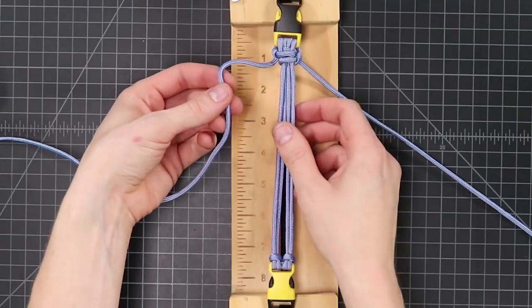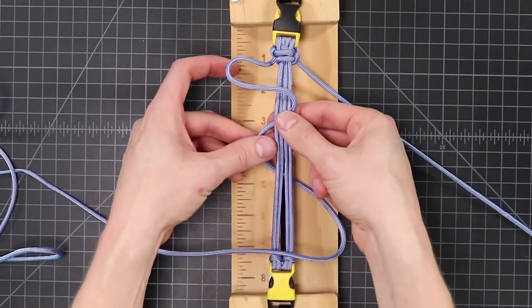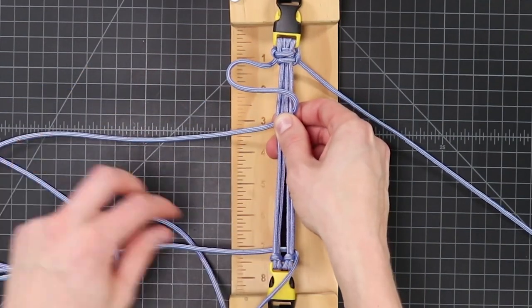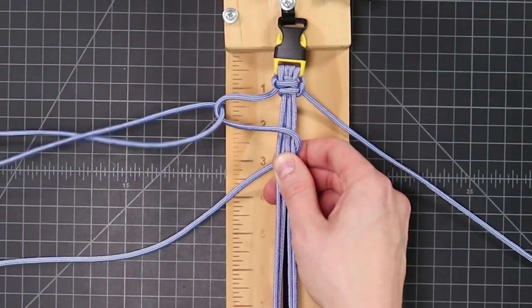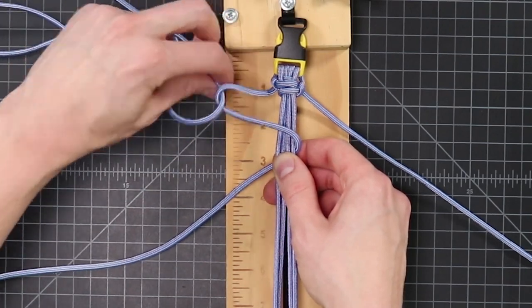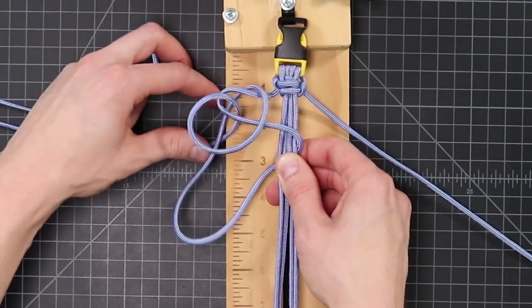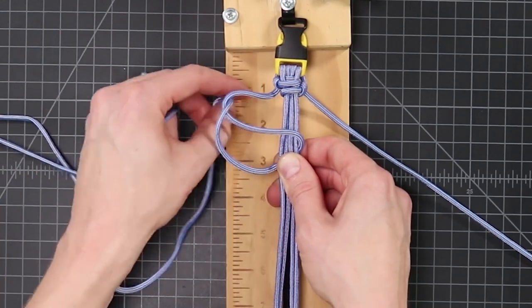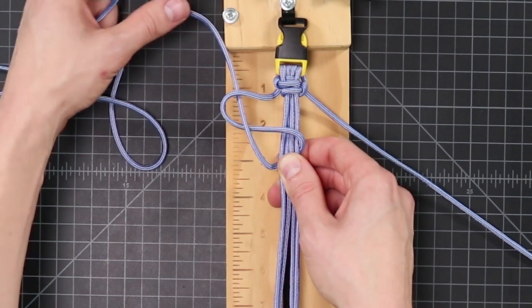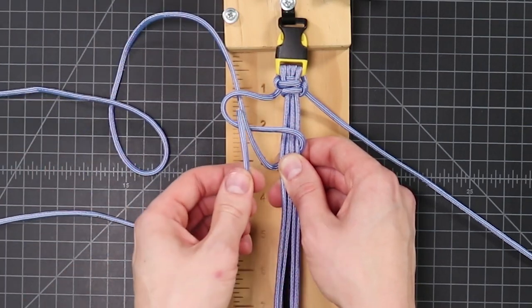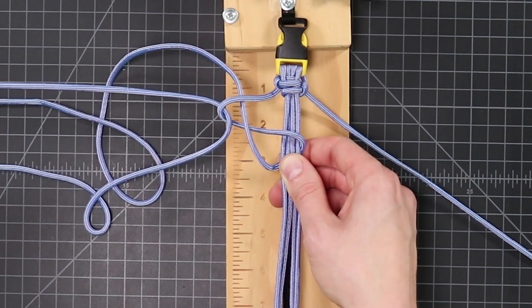We'll bring the cord across the top, and then back around the back. And then we'll bring our end down through that loop. Pull our cord through. So it looks like that. And then before we pull that tight, we're going to bring the cord down through the loop one more time, towards the outside from our first loop.